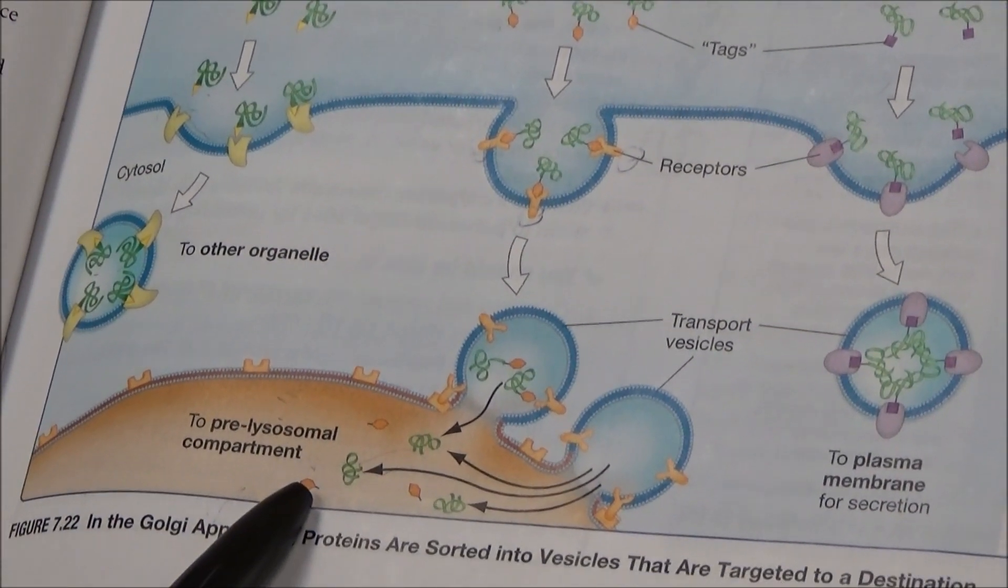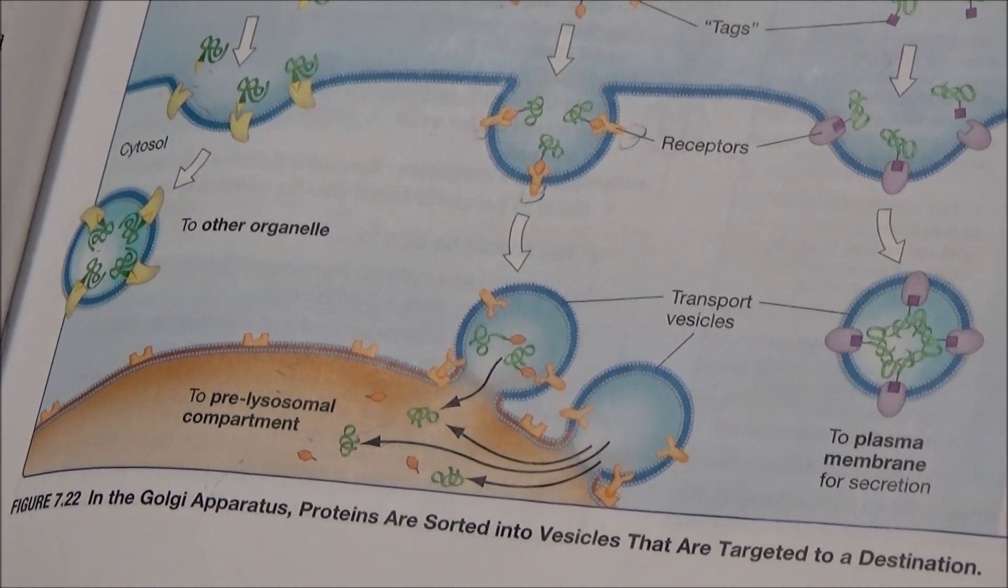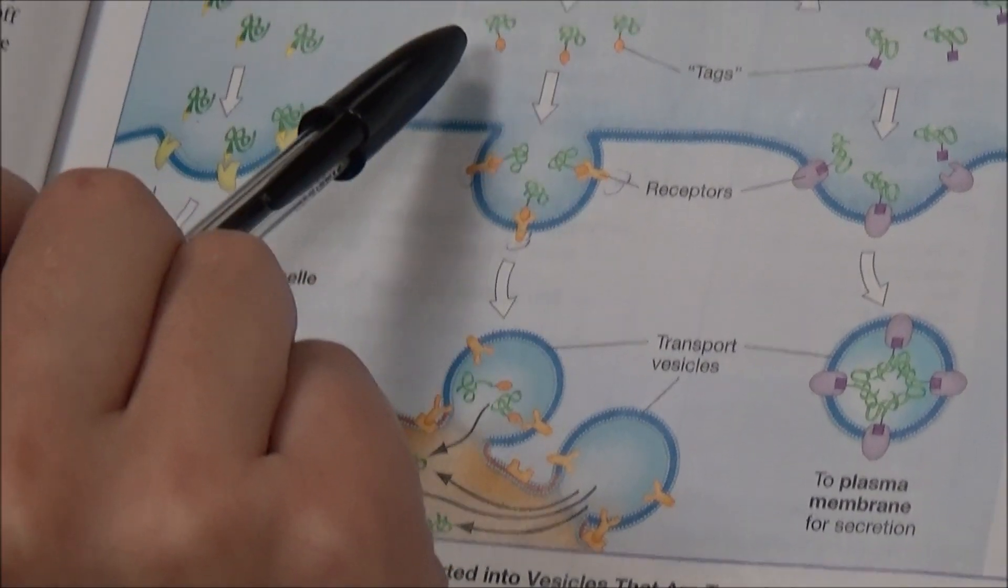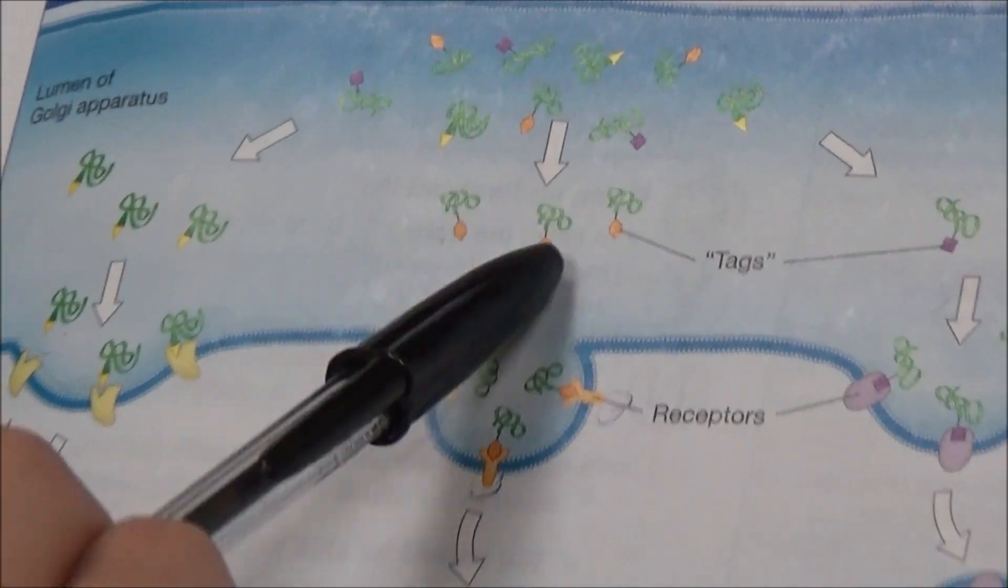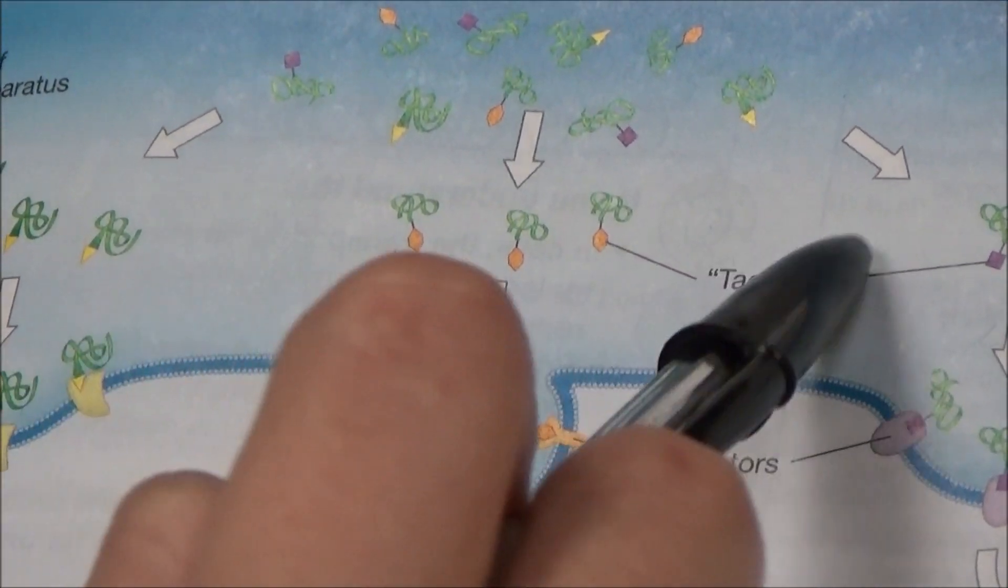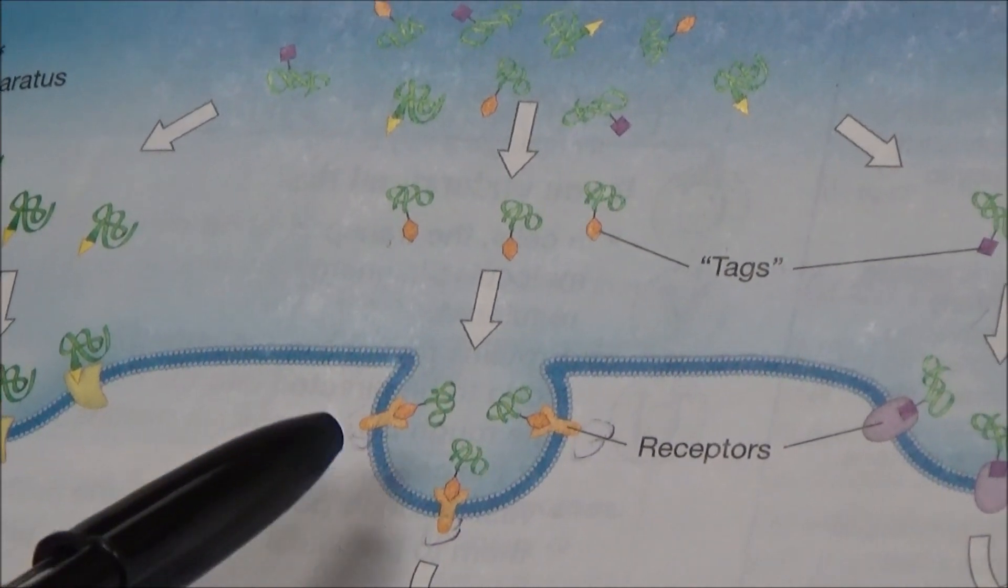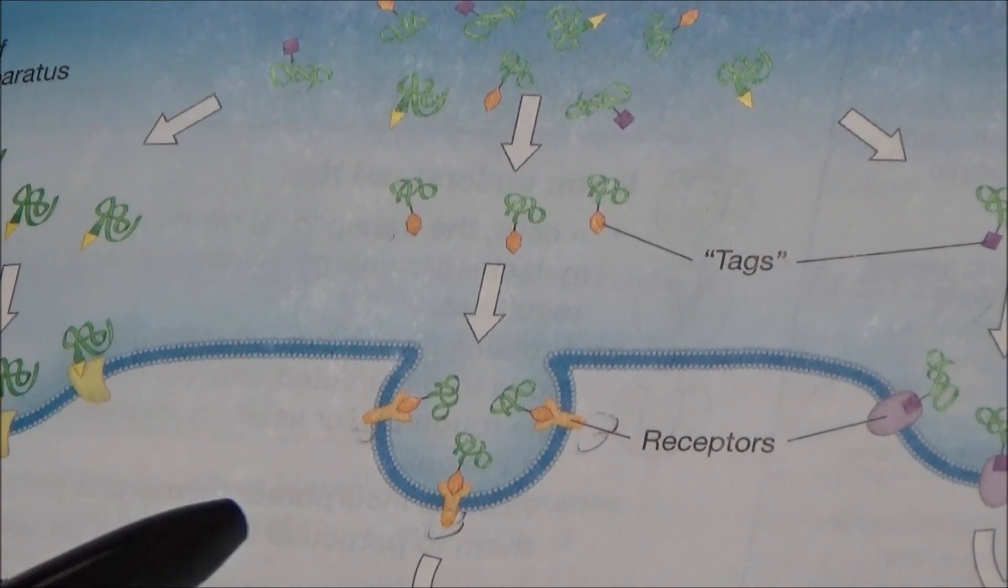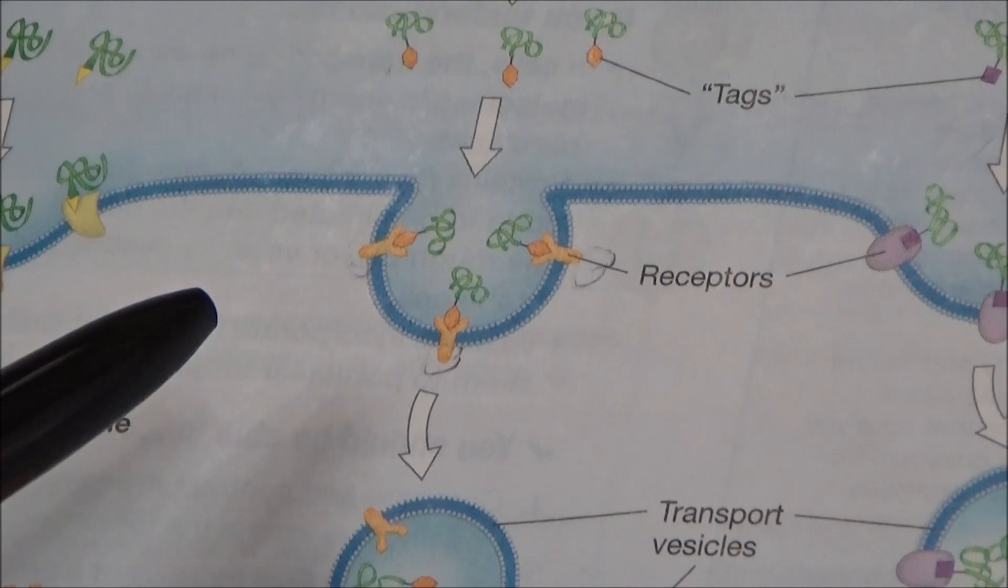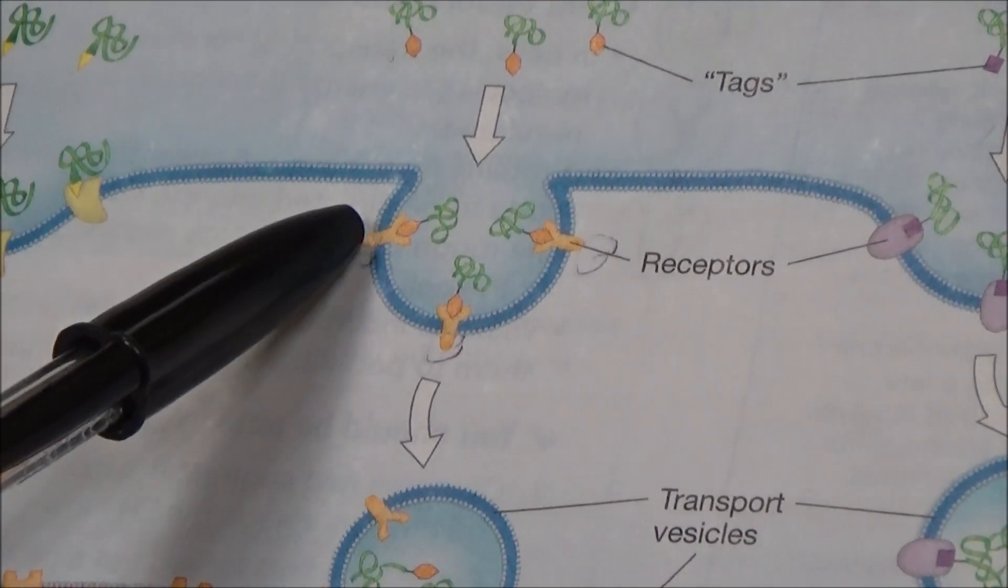In this case, the signal sequence is called mannose 6-phosphate. Mannose 6-phosphate is this orange signal sequence right here, and it's like a tag. What it does is it attaches to a specific receptor on the Golgi body, and you can see the receptors here.